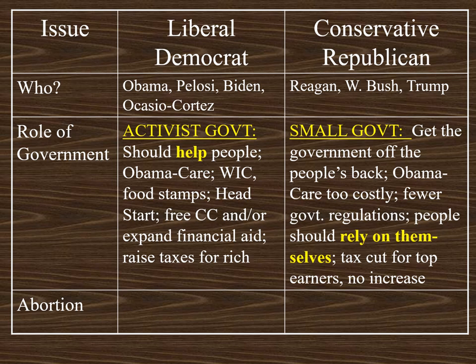Conservative Republicans would take a different approach. Rather than calling for an activist government, they want government to be as small as possible — get the government off the people's back. There should be fewer restrictions and fewer regulations. Obamacare? It'd be nice to offer health care to everybody, but it's far too costly. Rather than relying on the government for a handout, people should rely on themselves — pull themselves up by their own bootstraps. How are you going to pay for these programs — tax the rich? Instead, you should have a tax cut for those top wage earners so they can reinvest in the economy and create even more jobs. So: small government, people should rely on themselves, and a tax cut for the top wage earners.